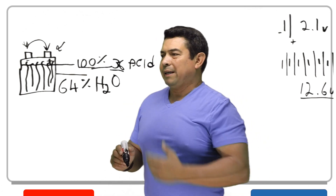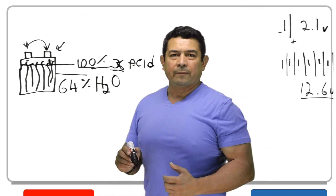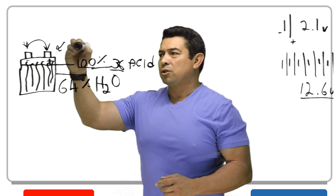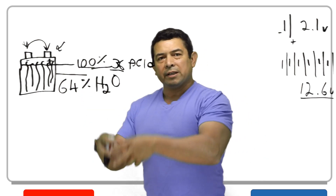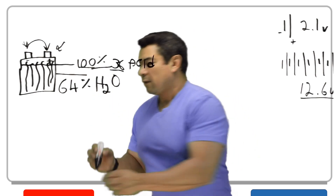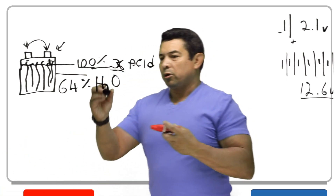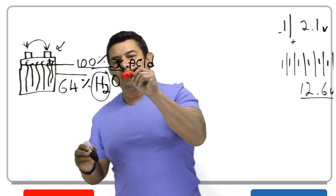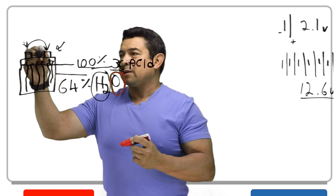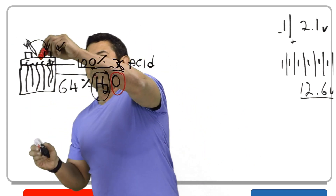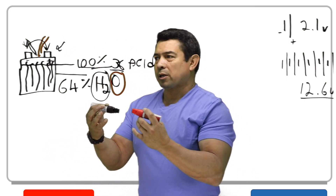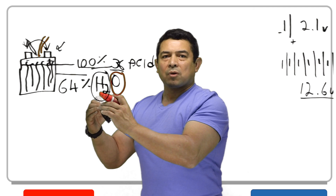At some point they tell you that you need to add water to the battery. Why? Because as we charge this battery, we're putting electricity into it, and when we do that we're going to break the H2O into hydrogen and oxygen. Because of that, we're going to get a little bit of hydrogen coming out and some oxygen coming out as we're breaking it apart. Eventually the level is going to drop.